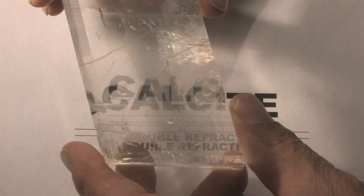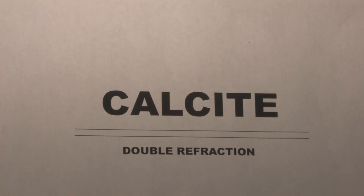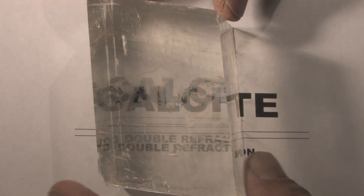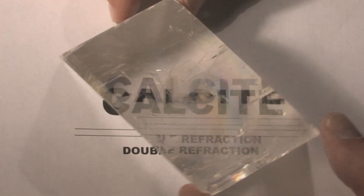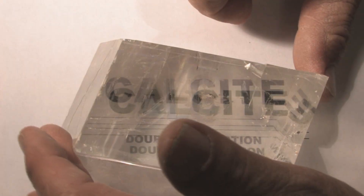Here's that piece of clear calcite. What I'm going to do is put it on this piece of paper here so that you can see the effect of double refraction. You should be able to see the doubling of the letters and the lines that I have written there. Let me turn this around a little bit so you can see how they move about.